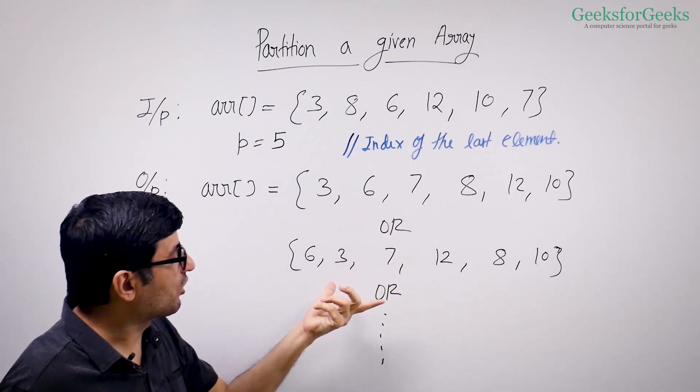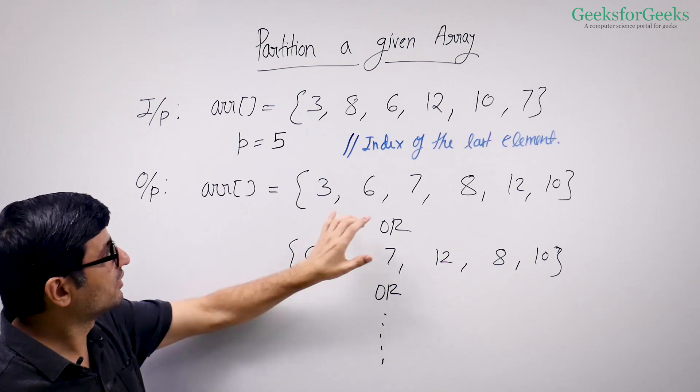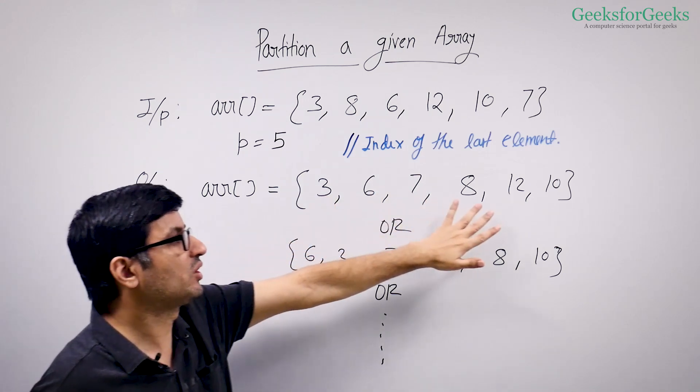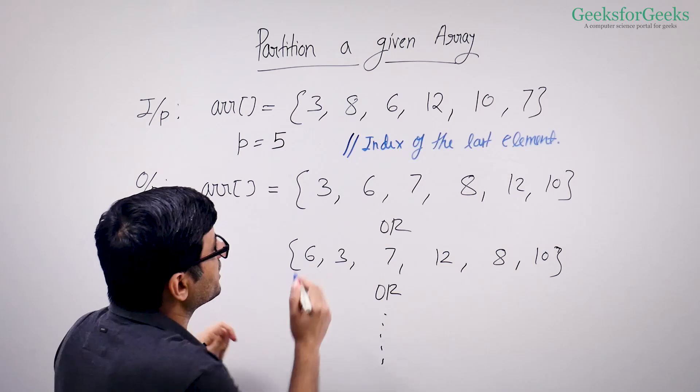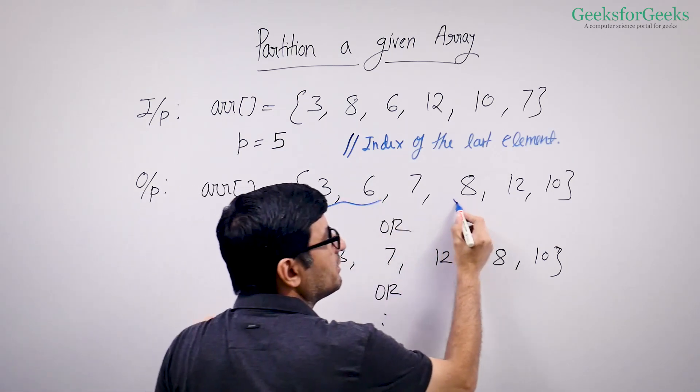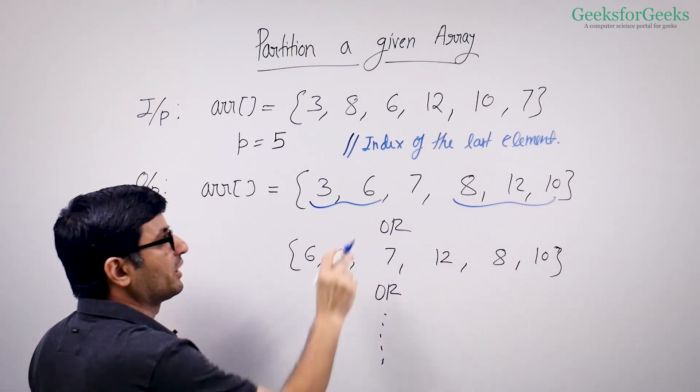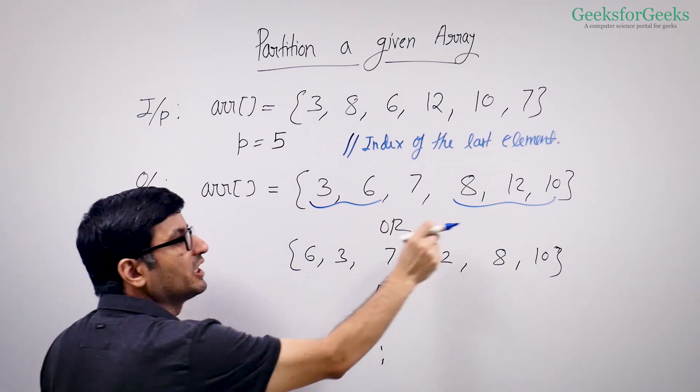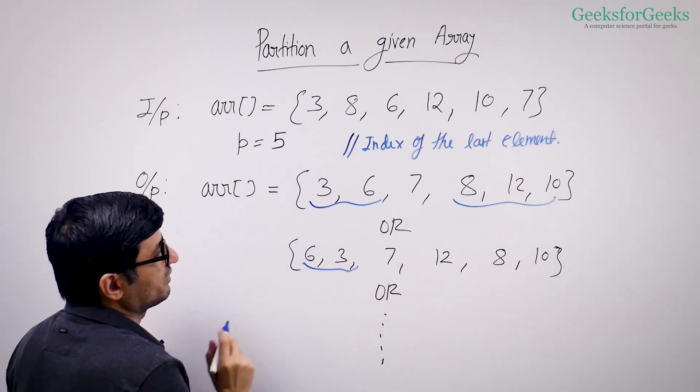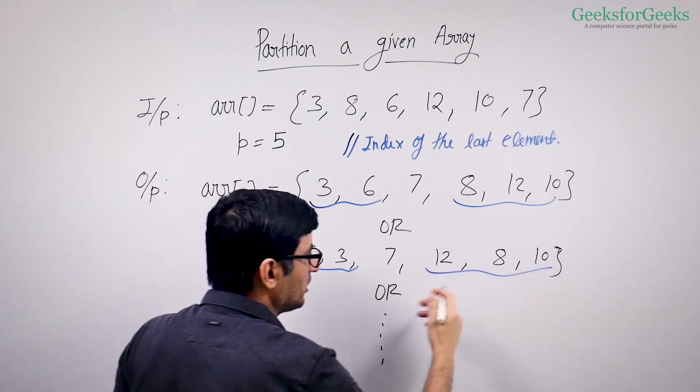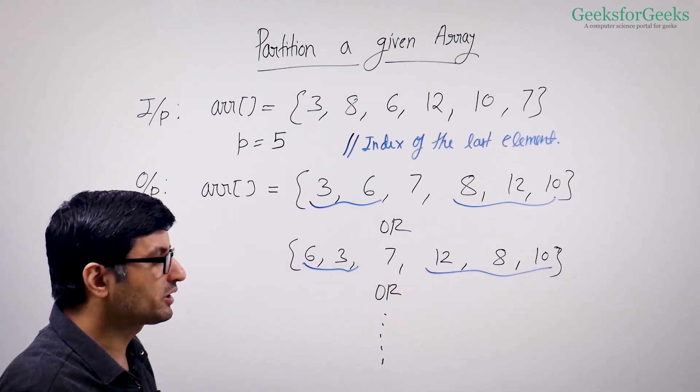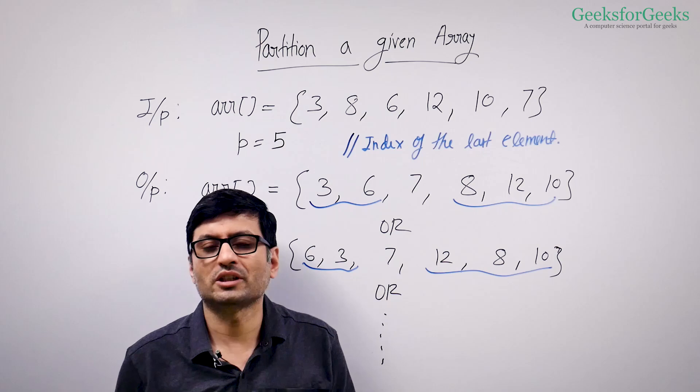There can be multiple possible outputs of the partition function. You can have 3, 6, 7, 8, 12, 10. Here all the elements here are smaller than 7, all the elements are greater than 7. But there can be multiple permutations of these elements and these elements. For example, this is a permutation, this is another permutation. So you can have multiple possible outputs and any of those outputs is valid.